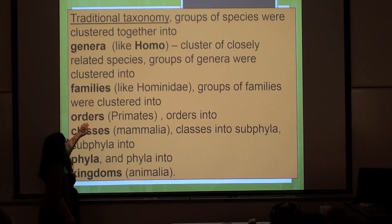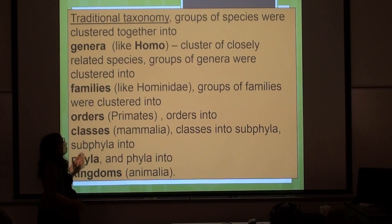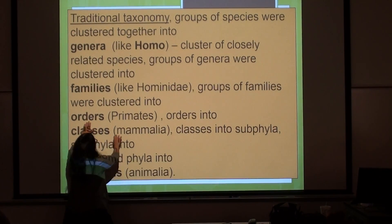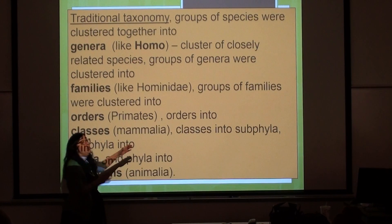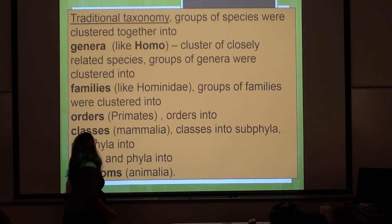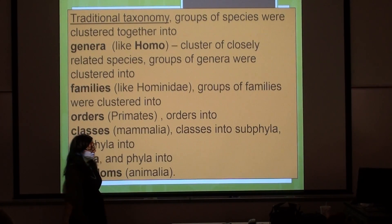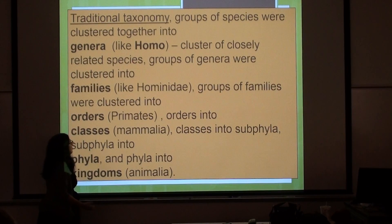Lemurs and lorises go into the order of primates, so we're in the order of primates, and we would expect to find shared derived characteristics that we share with those little bush babies you saw movies of on Monday. And then the class that we're in — the primates, carnivores, perissodactyls, the horses, the cetaceans — all those other mammals that have breast milk are in the class Mammalia.